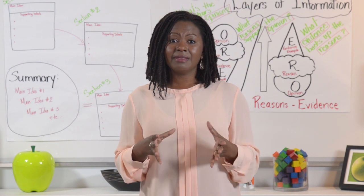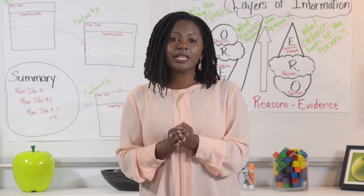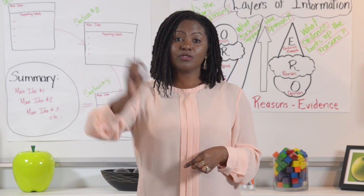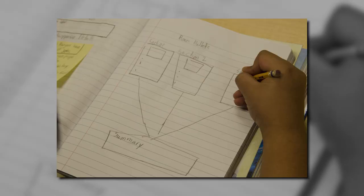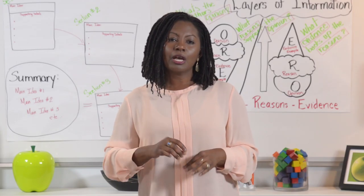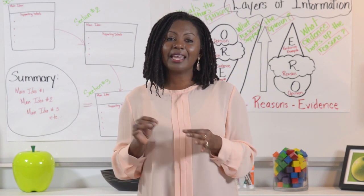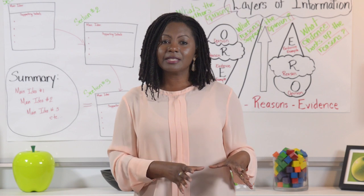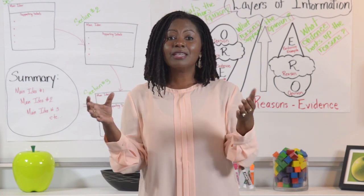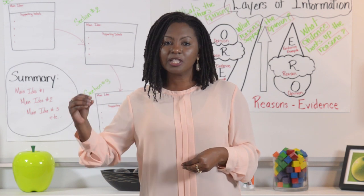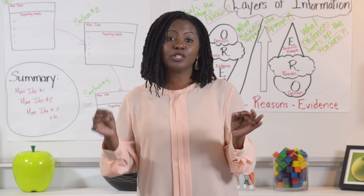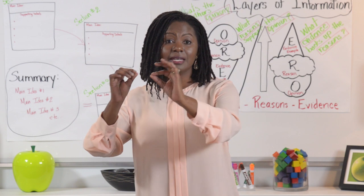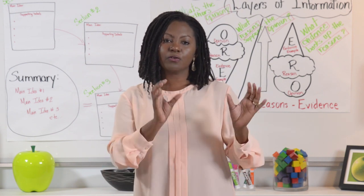Once students have done this section by section, we can tell them to take each of the main ideas from section one, section two, section three, and so on to create an overall summary of that article or piece of text. What's beautiful about doing boxes and bullets is that if a question asks what is the best summary of paragraphs one to three, and they've already done boxes and bullets for those paragraphs, it's very easy to come up with that summary — all they have to do is find the main ideas they already identified.